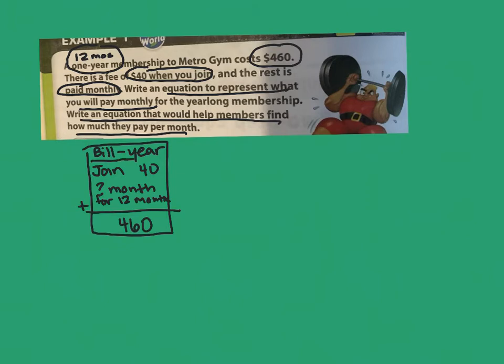So this one-year bill, I had to pay to join. And then I have this, I don't know how much I spend per month, but I did that for 12 months. And all of it equaled $460. So I'm going to go ahead and put equal $460.